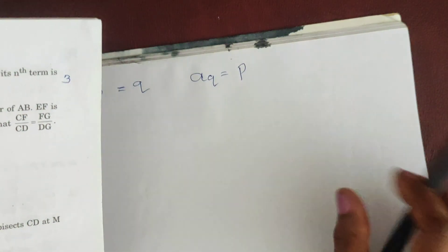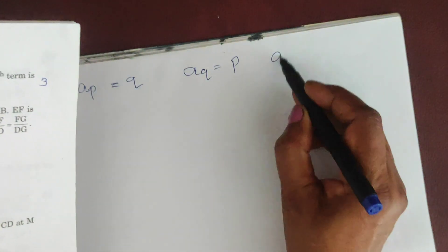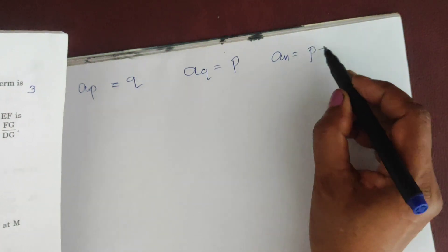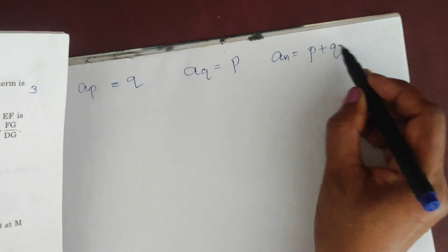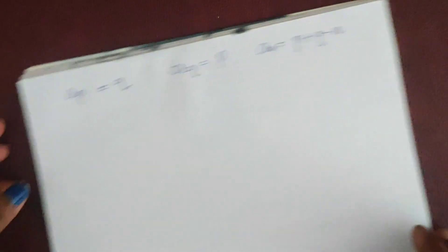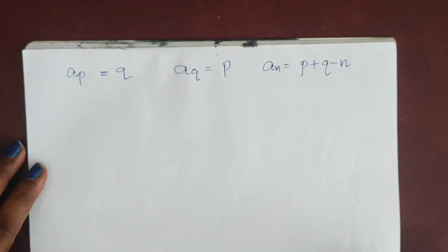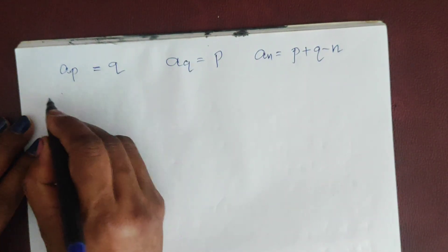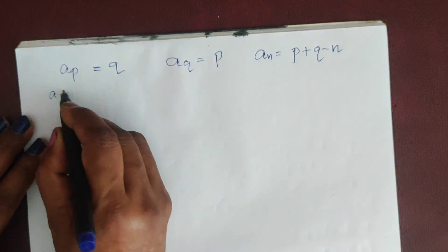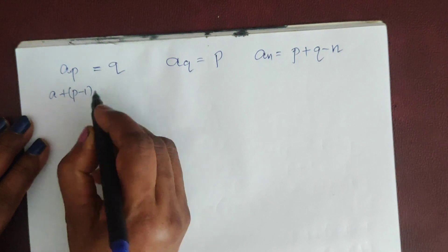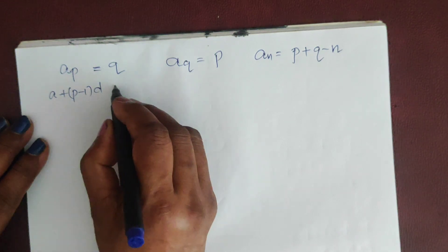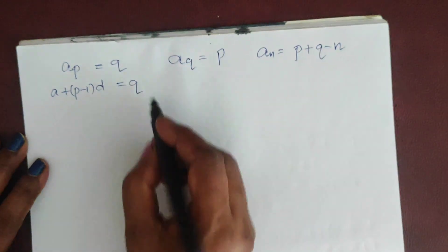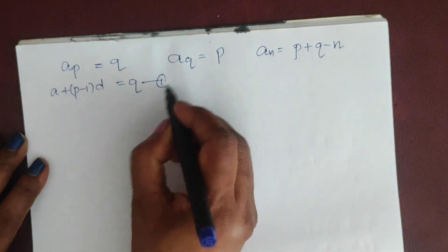We have to prove that the nth term equals p + q - n. The pth term is: a + (p - 1)d = q. That is the first equation.